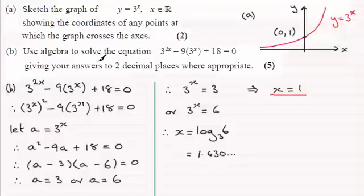And if you work this out on your calculator, you should find you get 1.630 and so on. And this is the one that we have to give to two decimal places. So we've got 1.63 to two decimal places, 2dp.